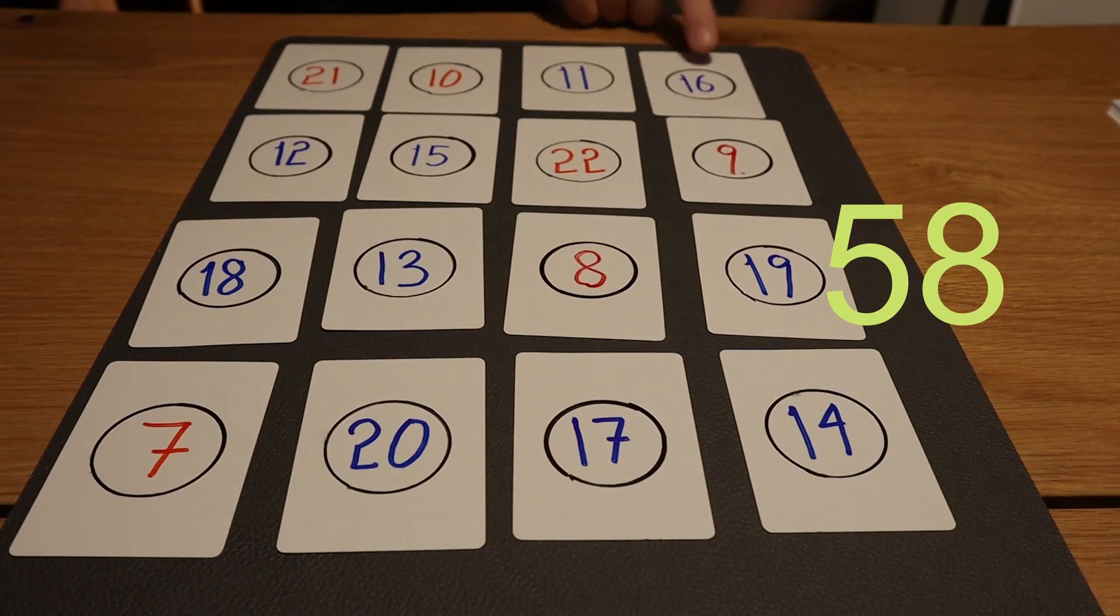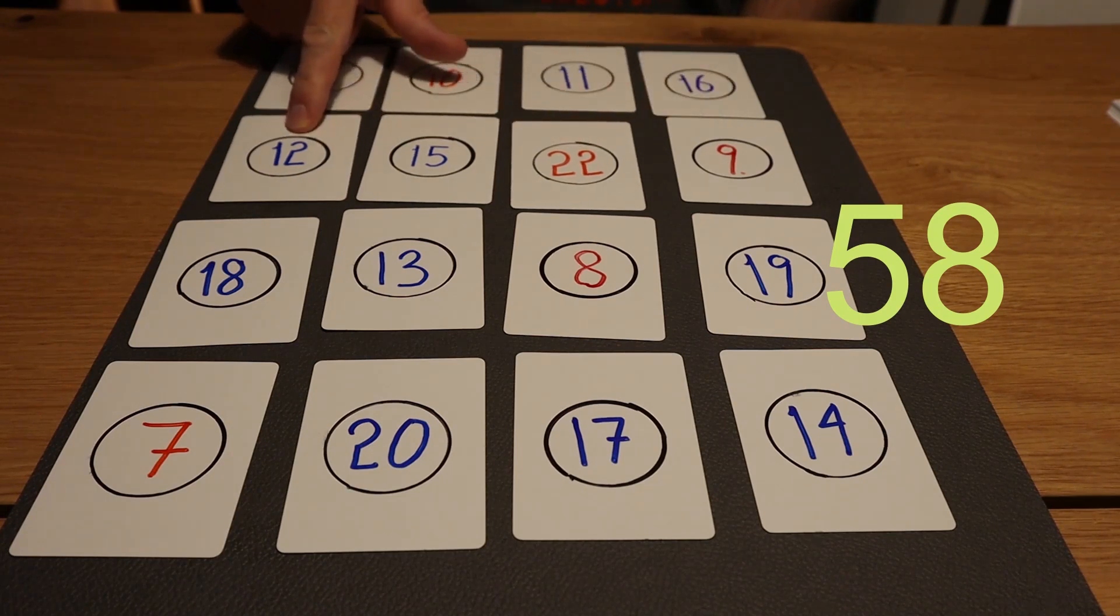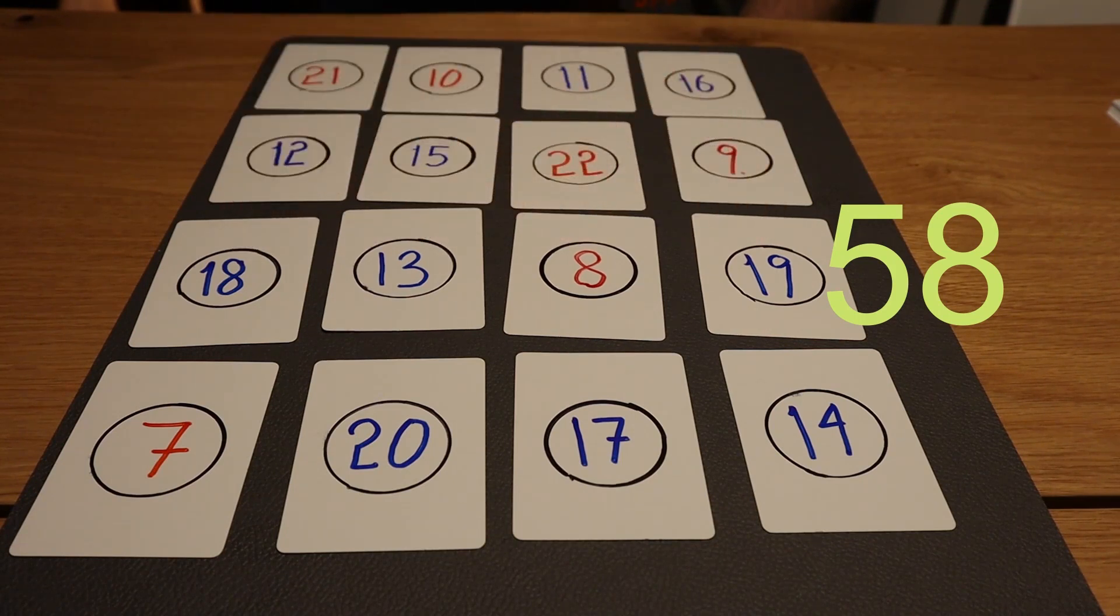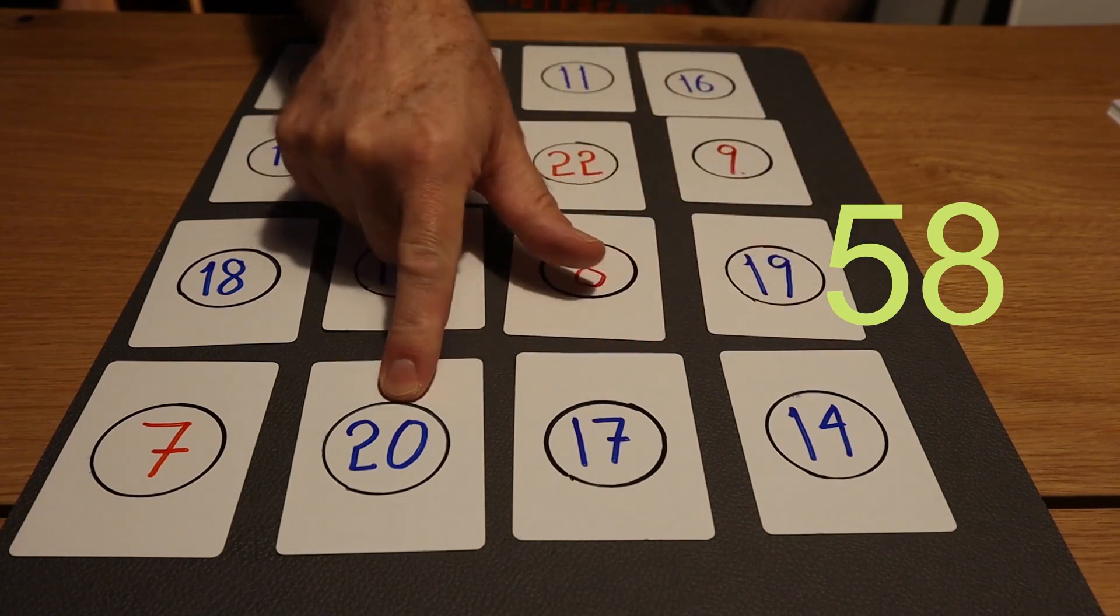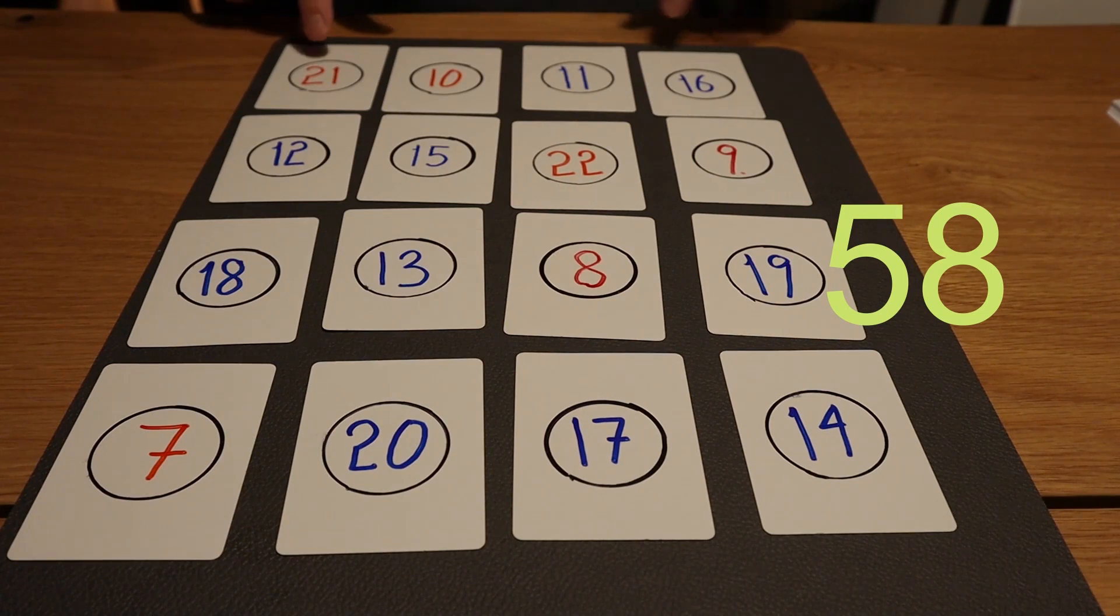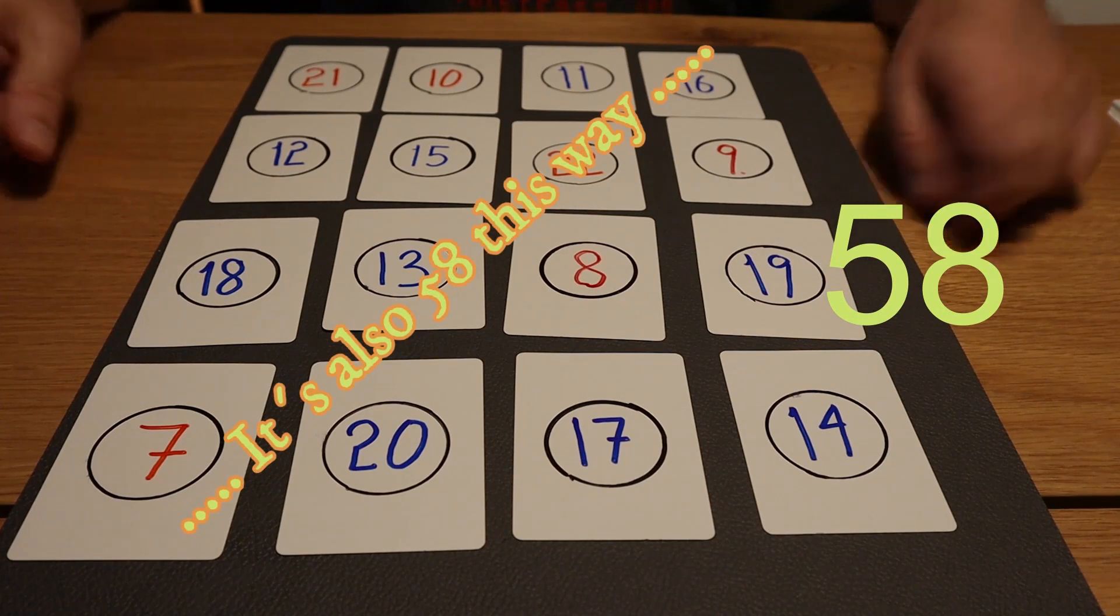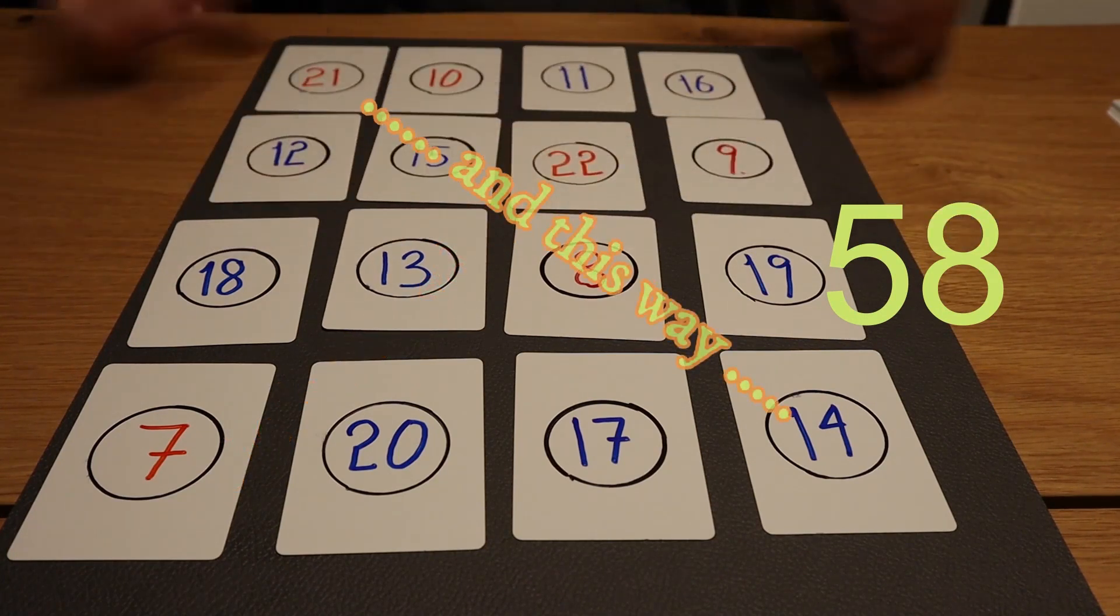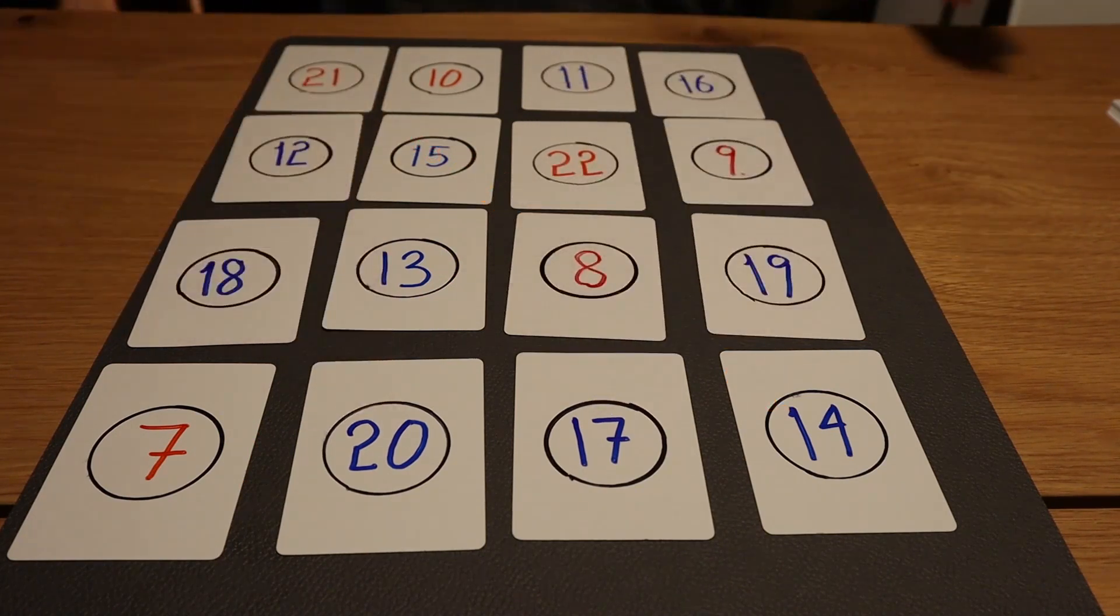And if we check here the other way, 16, 11, 10, 21, that's also 58. 9, 22, 15, 12, that's also 58. 19, 8, 13, 18 is also 58. 14, 17 is 31, plus 20, that's 51, plus 7 is 58. If we take the corners, 21, 16, 14, and 7, that's also 58. The middle here, 15, 22, 8, 13, is also 58. And here, this is also 58. And these four here is also 58. So everything is 58.